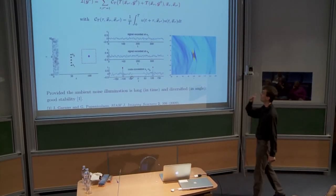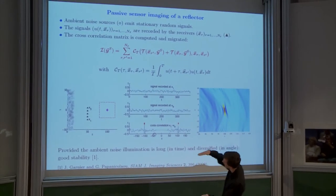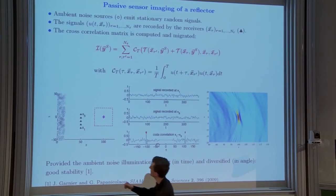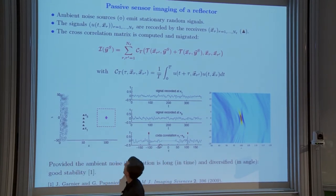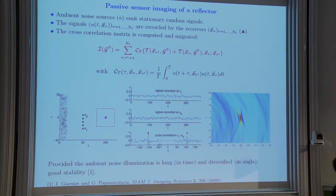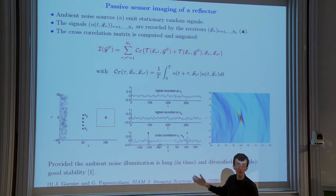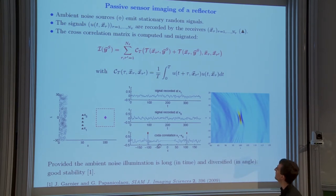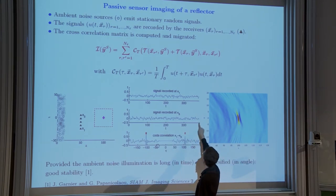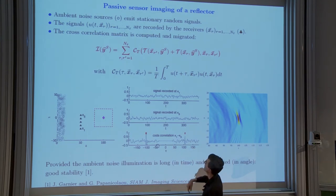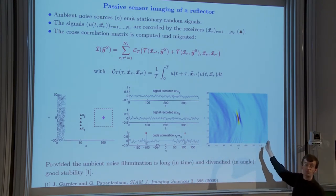Passive imaging setup: you have ambient noise sources emitting stationary random signals — pure noise — and receivers recording noise. But in the correlations between these signals, you have information. You need around 10,000 realizations to compute the correlations with high accuracy. Applying Kirchhoff to these correlations, you can localize the reflector with just ambient noise sources, as shown in the simulation.